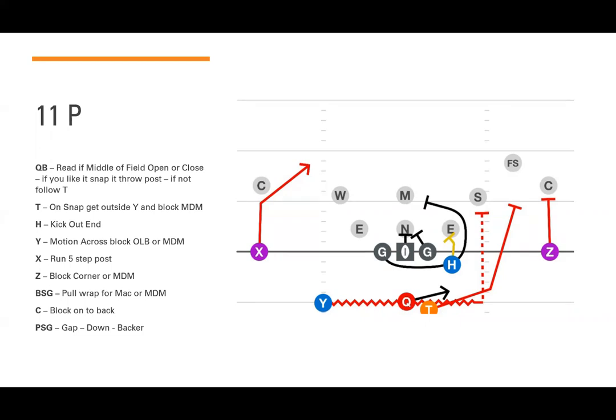We run the buck sweep RPO with our quarterback, so this is more of a quarterback buck sweep. But you could also run it with the running back as the buck sweep runner, and then the quarterback could read the backside end — kind of like a buck read play.